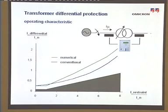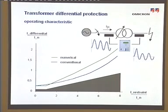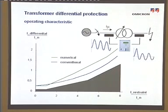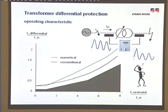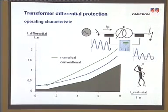In case of heavy through faults, the impact of CT saturation is taken into account by increasing the rise of the characteristic. While the effect of the first two differential currents can be calculated easily, the setting in the area of high stabilizing currents is difficult due to the non-sinusoidal behavior. Therefore, it is mainly based on experience. Many numerical relays are nowadays supplied with additional saturation detectors.